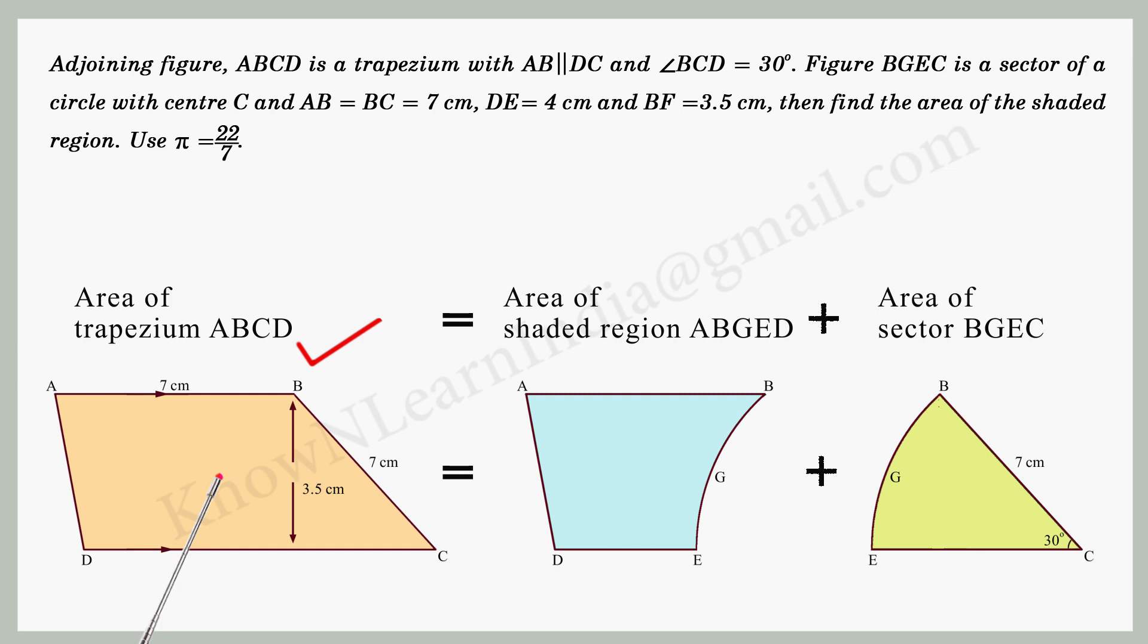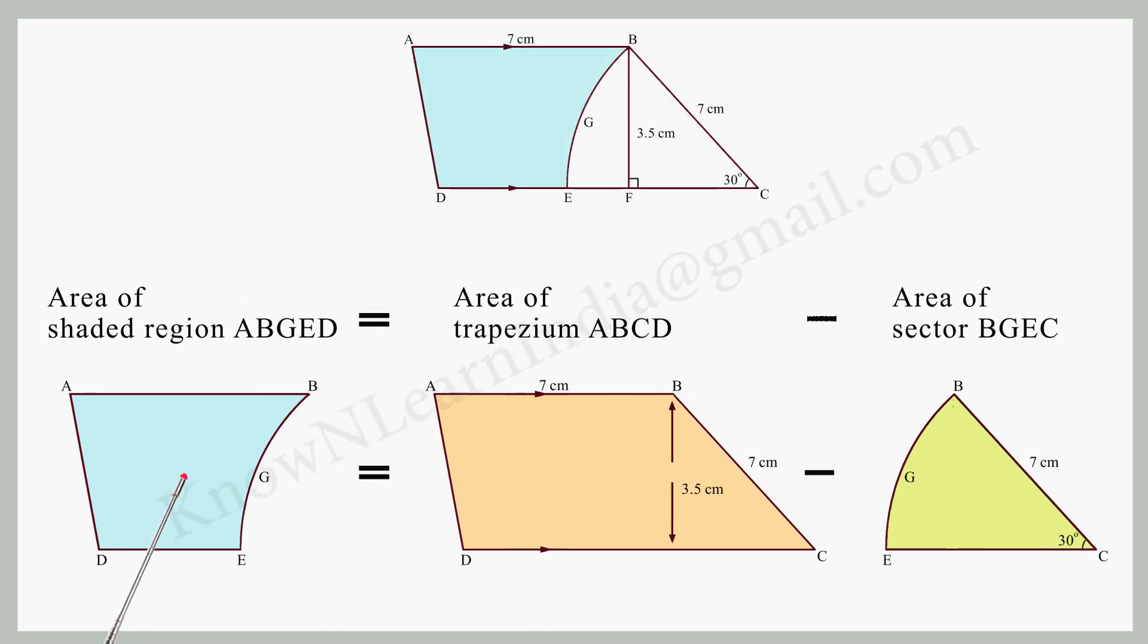With the given information, we can calculate the area of trapezium ABCD and the area of sector BGEC. So, to find the area of the shaded region, we need to subtract the area of sector BGEC from the area of trapezium ABCD.